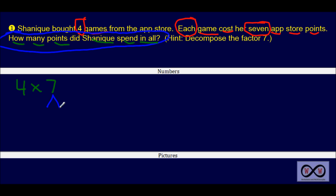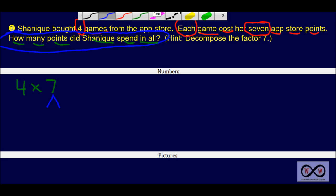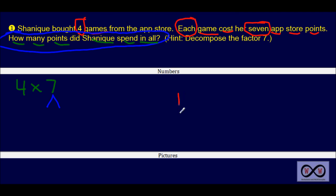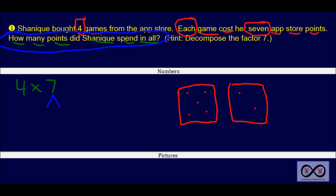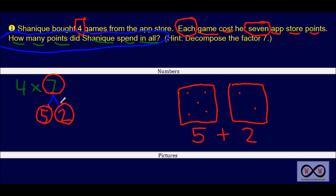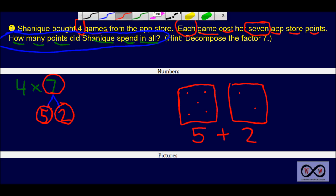How can we decompose? Well, decompose means to break down. How would we decompose a seven? Maybe you've played a dice game in the past — you roll two dice, and on one die you have five, and on the other you have two. That's seven. You have two addends that make up that seven: a five and a two. You could think of that as decomposing that seven. So five plus two absolutely equals seven. We can decompose seven into five and two, and now we can distribute our four in multiplication.